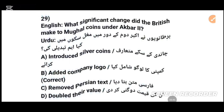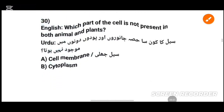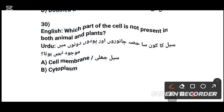MCQs number 29: What significant change did the British make to Mughal coins under Akbar? MCQs number 30: Which part of the seal is not present in both animal and plant cells? Tick the correct option.